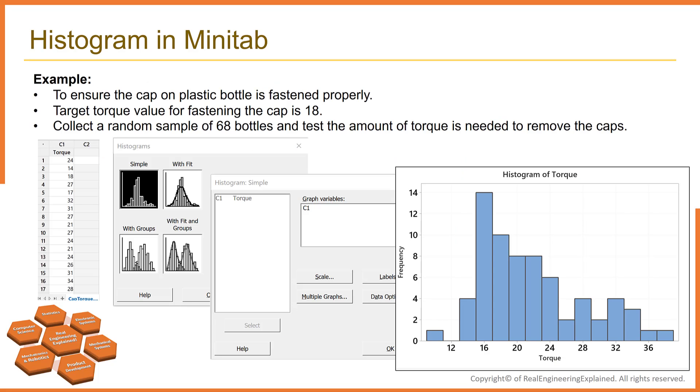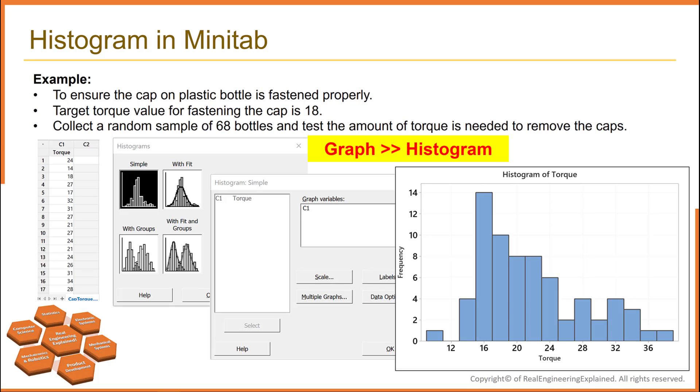Here is an example. A quality control engineer needs to ensure that the caps on plastic bottles are fastened correctly. If the caps are fastened too loosely, they may fall off during shipping. If they are fastened too tightly, they may be too difficult to remove. The target value for fastening the caps is 18. The engineer collects a random sample of 68 bottles and tests the amount of torque that is needed to remove the caps.